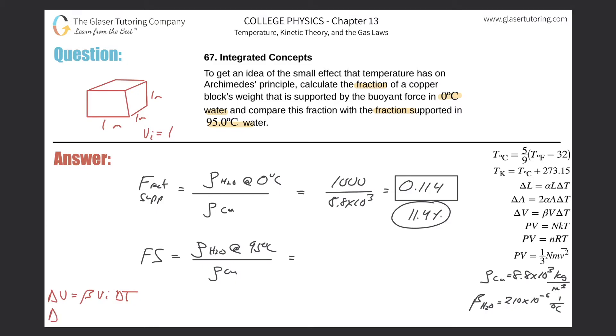If I had to now calculate the change in volume, I would need the beta value, and this is looked up. The beta value for water is going to be 210 times 10 to the minus six, then multiply that by the initial volume of one, then multiply by the change in temperature, final minus initial, so it's 95 minus zero.